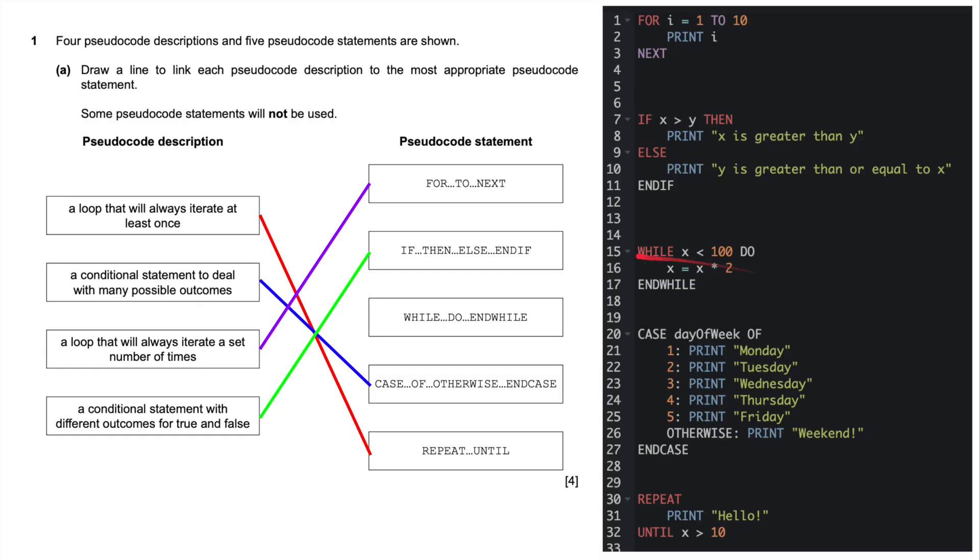That's what we've got there, with true or false outcomes. And I've put in the while loop there, which doesn't exist in the question, but while, do, end while. While x is less than 100, do x equals x times 2. So there's a little example of a while loop in pseudocode.